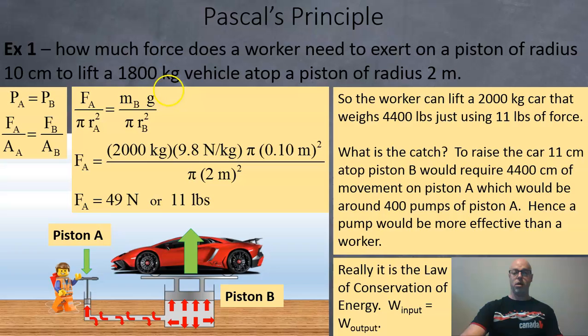If we rearrange the equation we're going to get 2,000 kilos for the mass times 9.8 newtons per kilo for G and then we've cross multiplied the pi r squared over. So we have pi times 0.10 meters which is the 10 centimeters squared divided by pi times 2 meters squared.